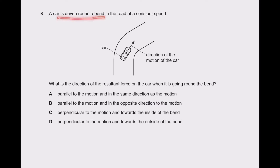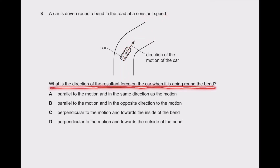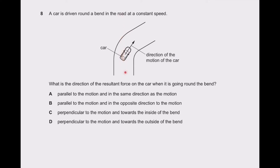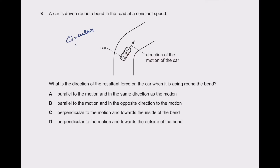Question 8: a car is driven around a bend in the road at constant speed. Speed is not changing, but direction is changing. If there were no force, it would move in a straight direction. Due to a force acting perpendicular to the motion and towards the inside of the bend, it changes direction without changing speed. This is the centripetal force we learned in circular motion — acting inwards. So answer C is the right answer.